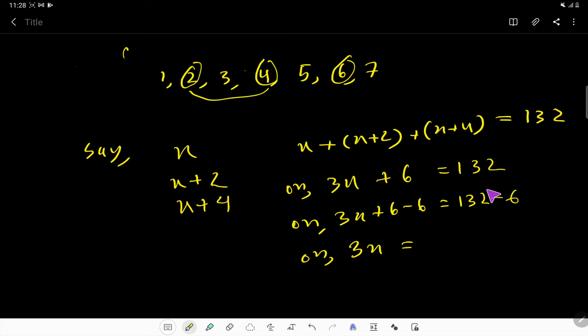So first of all, 132 minus 6, that is 6, 6.